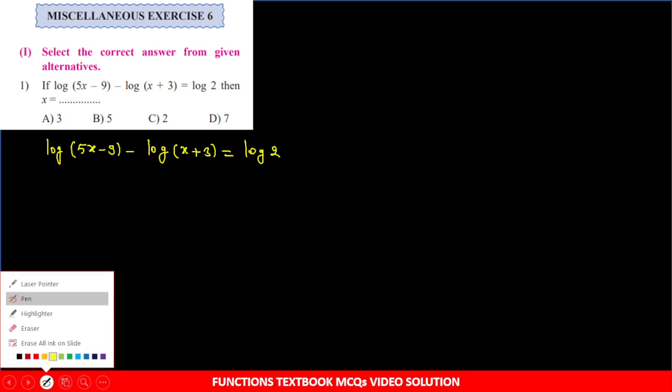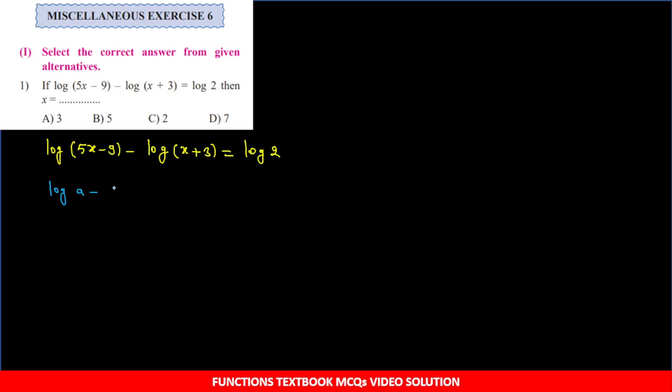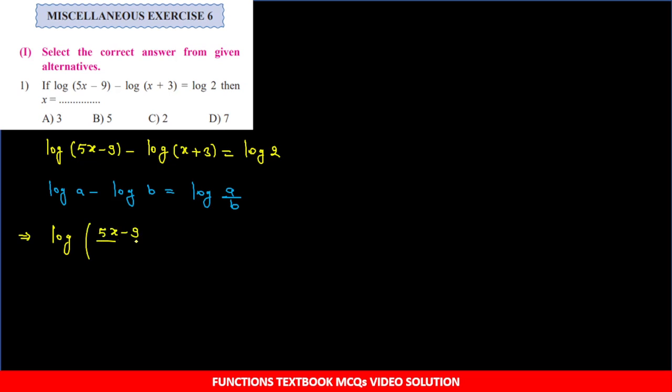Equation given: log(5x - 9) minus log(x + 3) equals log 2. Left hand side mein log ki property apply kar raha hoon - log a minus log b equals log(a/b). So a ki jagah 5x minus 9, b ki jagah x plus 3. Left hand side mein bnega log of (5x - 9)/(x + 3), and right hand side is log 2.